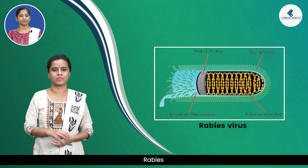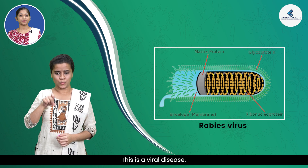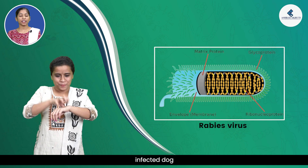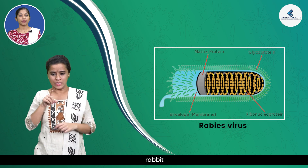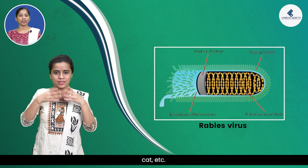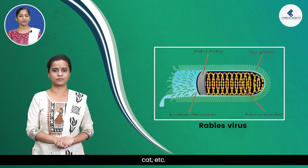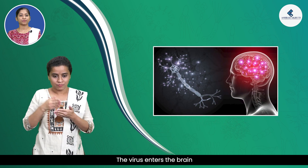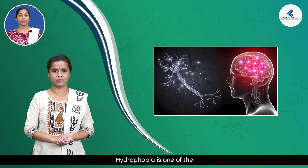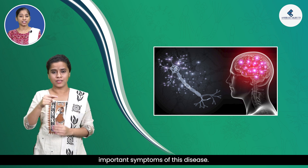Rabies. This is a viral disease. It occurs due to the bite of an infected dog, rabbit, monkey, cat, etc. The virus enters the brain via neurons. Hydrophobia is one of the important symptoms of this disease.